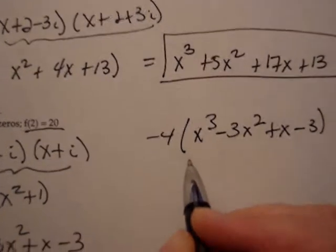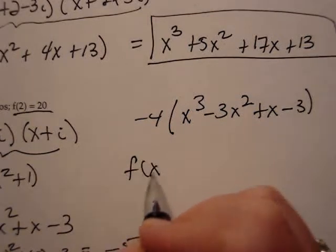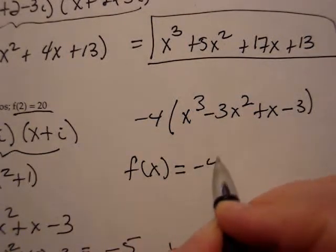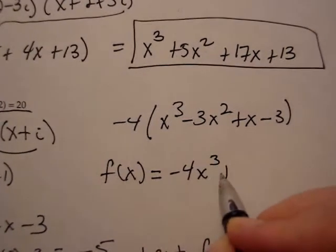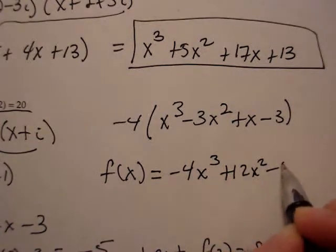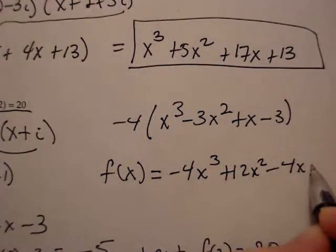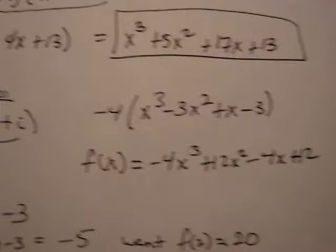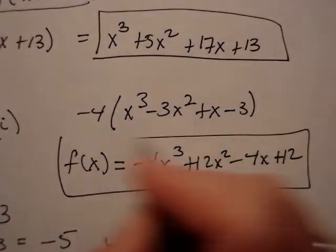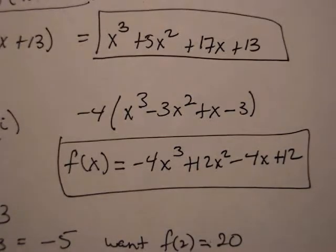And then when I distribute that, I will get our polynomial is actually f of x equals negative 4x to the third plus 12x squared minus 4x plus 12. And that is the final answer.